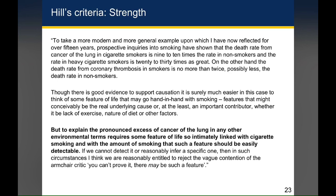Bradford Hill says that to explain the pronounced excess of cancer of the lung in any other environmental terms requires some feature of life so intimately linked with cigarette smoking and with the amount of smoking that such a feature should be easily detectable. So what he's saying is that for confounding to be true, the confounding variable would have to be so tightly linked to smoking that it would just be super obvious. In the absence of such a super obvious feature, it must be true that smoking causes death and lung cancer well beyond what's seen in non-smokers. Simply the strength of that relationship — nine to ten times in smokers and 20 to 30 times in heavy smokers — means this relationship must be causal because it's just so strong.